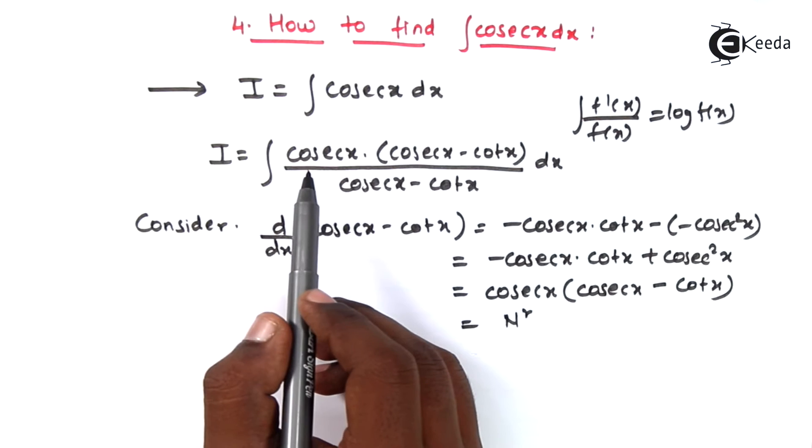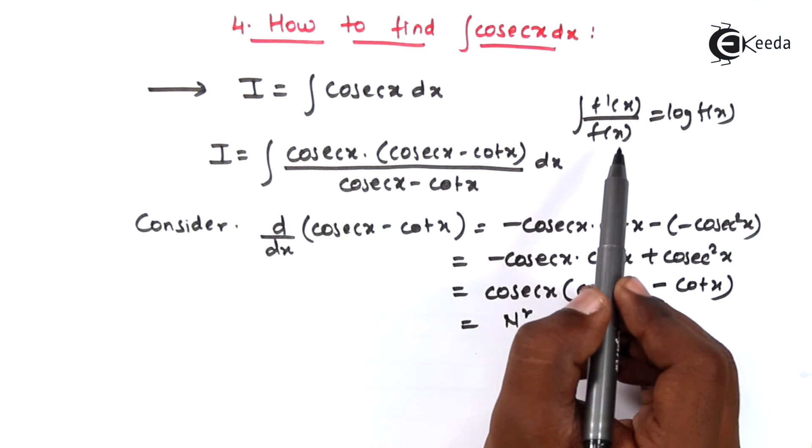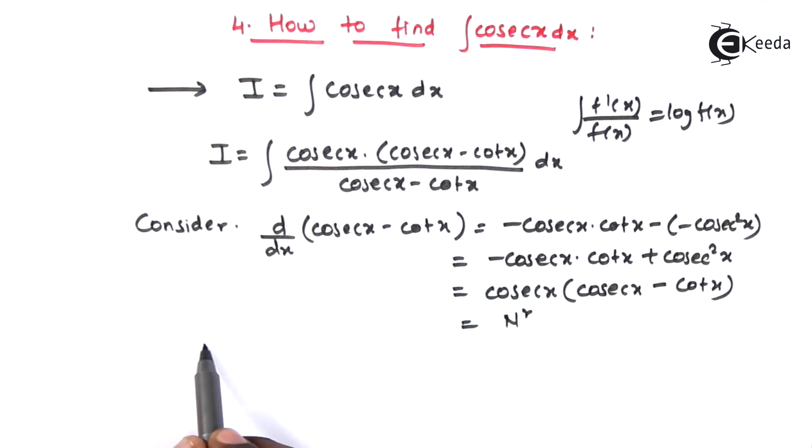That means the given integral I is in the form of integral f dash x upon f of x. That will give you log of f of x. f of x is cosec x minus cot x plus c.